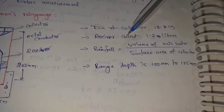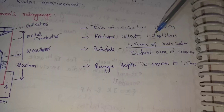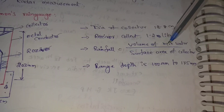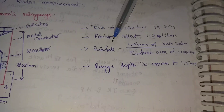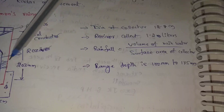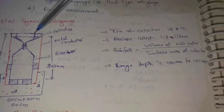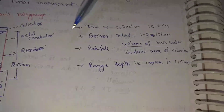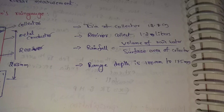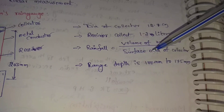Rainfall is calculated as: Rainfall = Volume of rainwater divided by Surface area of collector. This is a non-recording type rain gauge, so we manually manage every calculation. The depth is found from the volume of rainwater divided by the collector area.